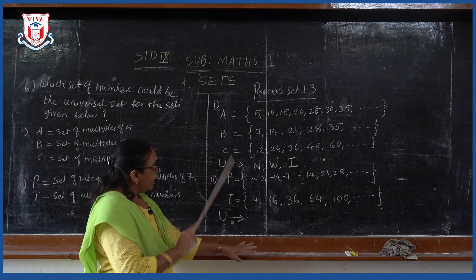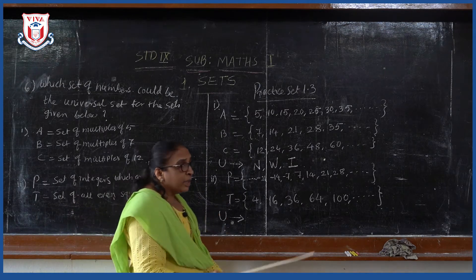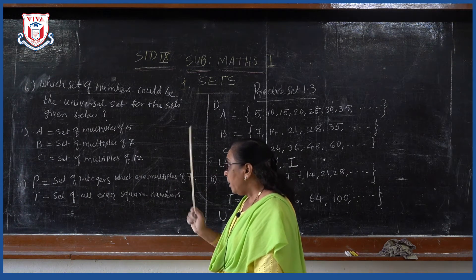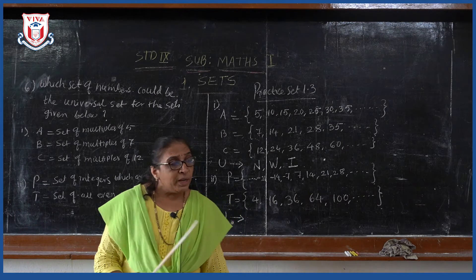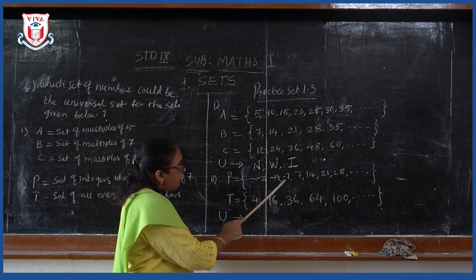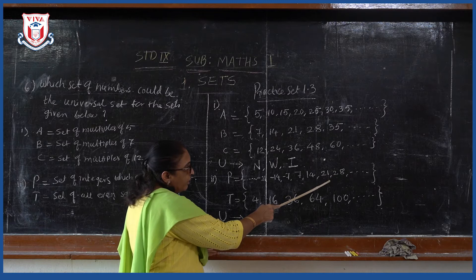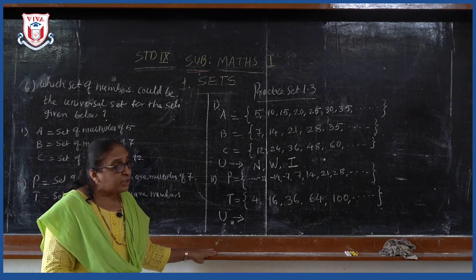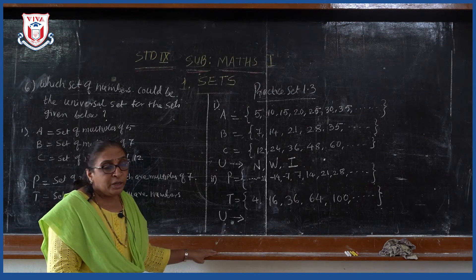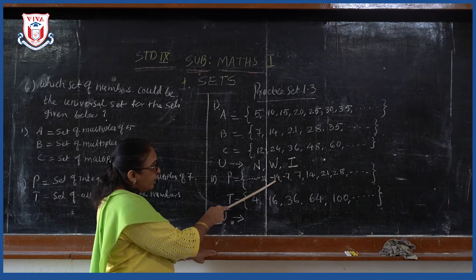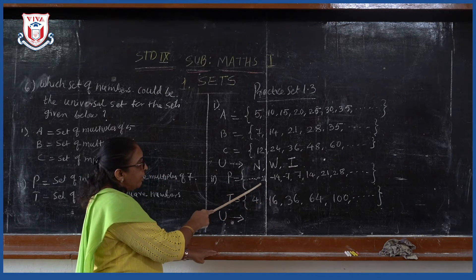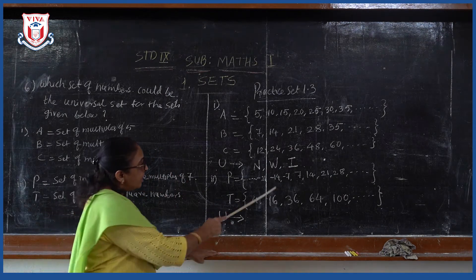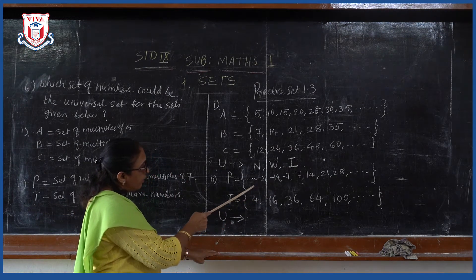Similarly, if you see the second example: P is a set of integers which are multiples of 7. Multiples of 7 are 7, 14, 21. But they have given the condition 'integers', so negative numbers will also be included: minus 7, minus 14, minus 21 and so on — extending infinitely in both directions.